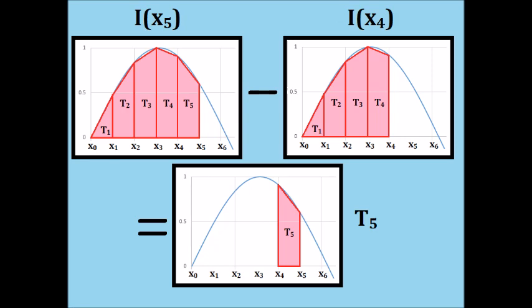Take a look at this picture. Let i as a function of x represent the summation of panels. So i of x5 is the area of the first five panels, and i of x4 is the area of the first four panels. If we subtract i of x5 minus i of x4, we are left with only the area of the fifth panel. I've called it t5, t for trapezoid.